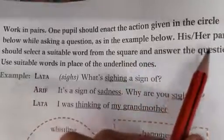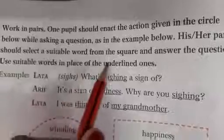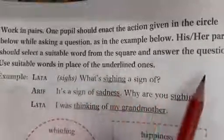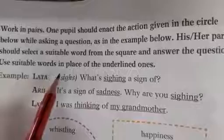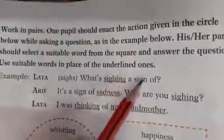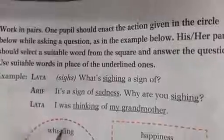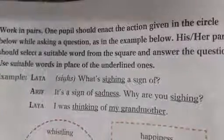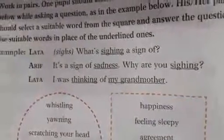His or her partner should select a suitable word from the square and answer the question. Use suitable words in place of the underlined words. One example is given. We have to use the circle words for the question and these words from the square for the answer and make the dialogues.